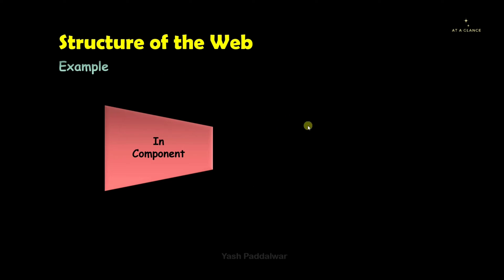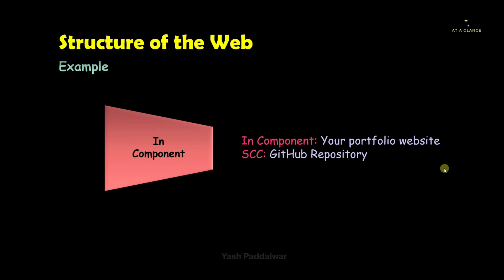For an example: the in component is your portfolio website, and the SCC is a GitHub repository. Inside your portfolio website you can have GitHub repository links to the code for your projects. So your portfolio website — the in component — can reach the GitHub repository by following the link present in it. But your GitHub repository cannot directly reach back to the portfolio website. So the in component reaches the SCC, but the SCC cannot reach the in component.